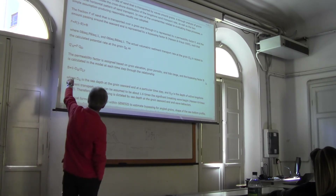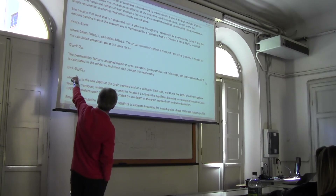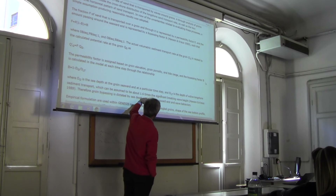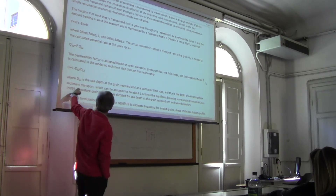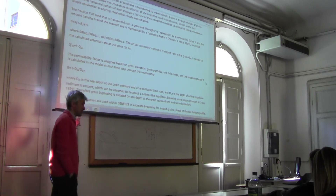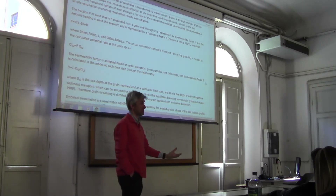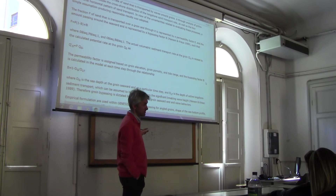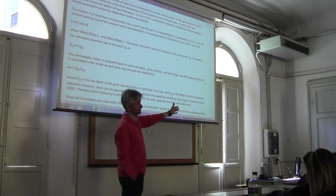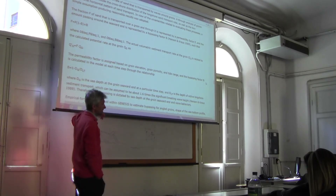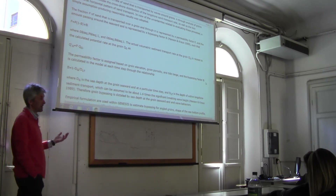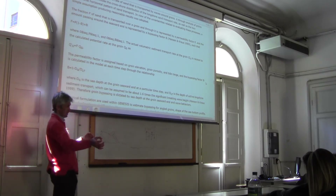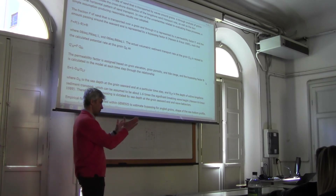For the bypass rate B, the model calculates B according to a relationship where DG is the sea depth at the groin's seaward end, and D-LT is the depth of the active longshore sediment transport. If the active sediment transport extends beyond the groin depth, it's more likely that you have bypass. If the groin extends much further in depth than the active sediment transport, it's less likely that you have bypass. By giving these parameters to the model, it estimates B and then corrects the longshore sediment transport accordingly.